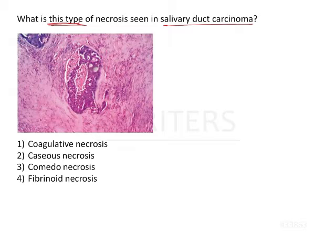In the breast as well as the salivary glands, there is a particular type of necrosis called comedonecrosis. This necrosis occurs only in the case of cancer. It is seen under the microscope and it is called comedonecrosis.